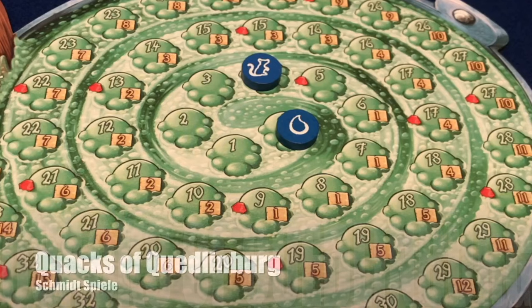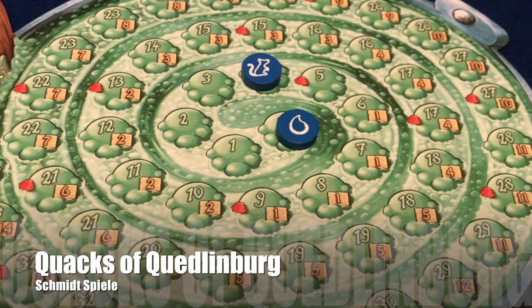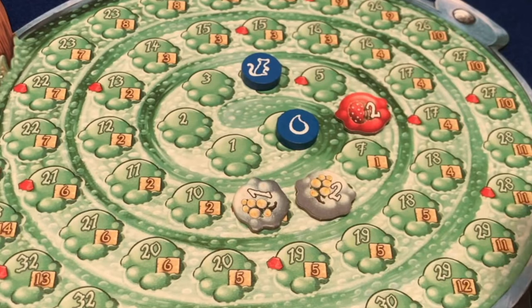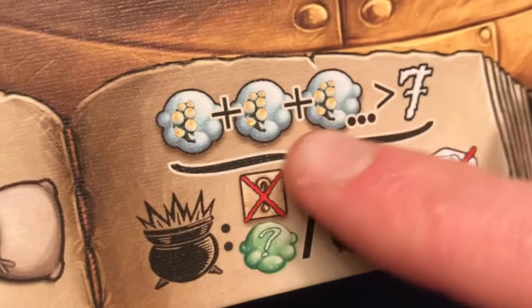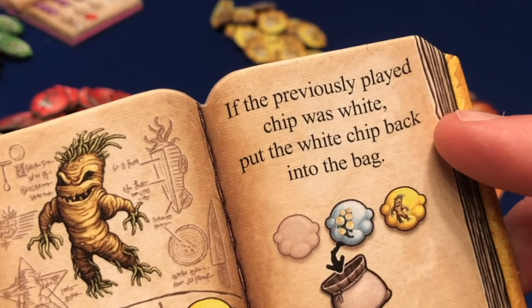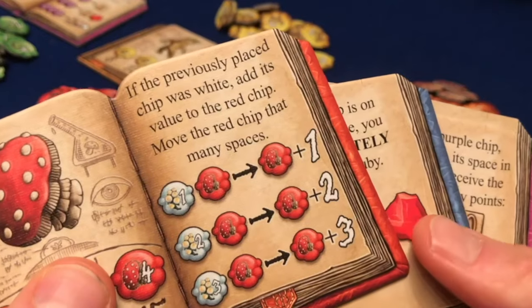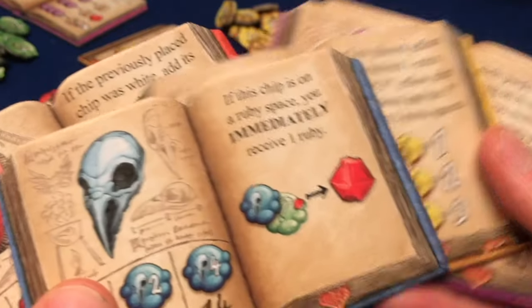Most games are going to excel in a couple of categories and not so much in the others, so let's take a look at some examples. Quacks of Quedlinburg doesn't have much of a coherent narrative and it's very low on interaction. Your choices do matter but they can easily be overwhelmed by bad luck, so they're only moderately meaningful. But the game is high on tension and consistently offers incredible feedback — whether you've drawn just the chip you wanted to gain a powerful combo, or exactly the wrong chip out of your bag causing you to go bust. You pushed your luck just one step too far.